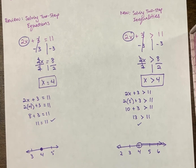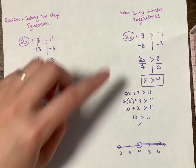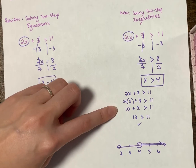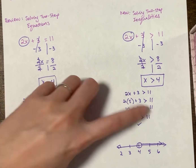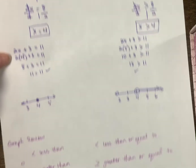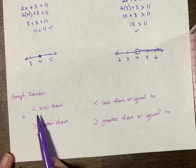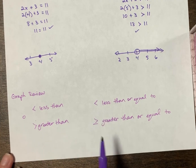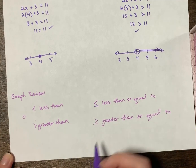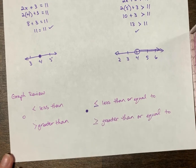We're going to do a few more examples, focusing on solving and graphing. You can always do the check step if you need to. As a review for your graph: an open circle is used when it's a strict less than or greater than sign. A closed circle is used when it's less than or equal to, or greater than or equal to.